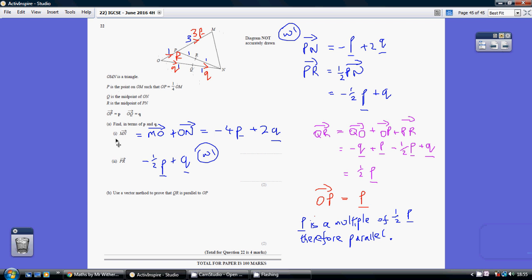Now for part one, we've been asked to express MN in terms of p and q. We're going to go this route: M to O and O to N. So M to O is minus 4p—that's 3p and 1p—and then plus 2q.